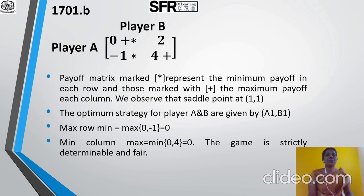Let us see Example B. Player A, Player B. The 2×2 payoff matrix entries are: 0, 2, −1, 4. The payoff matrix — marked star — represents the minimum payoff in each row and those marked plus the maximum payoff in each column. We observe that the saddle point is at position (1, 1). The row minimum for row 1 is 0 and for row 2 is −1. The column maximum for column 1 is 0 and for column 2 is 4. Star and plus coincide at point (1, 1). So the optimum strategy for Players A and B is A1, B1. Maximum of Row Minimum = Minimum of Column Maximum = 0. Therefore, the game is strictly determinable and fair.